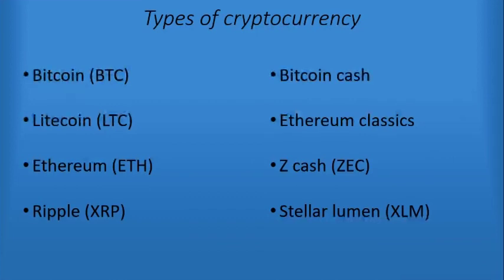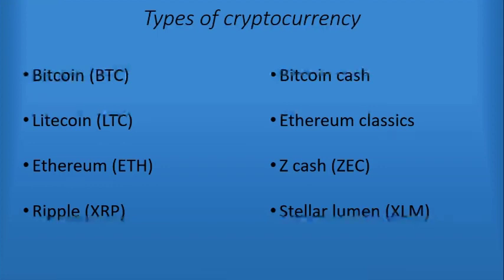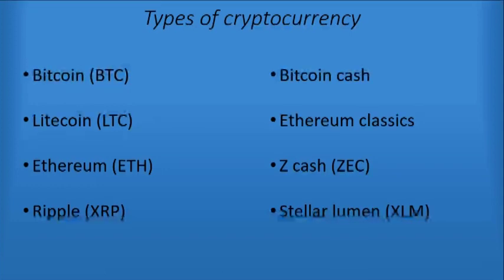Let's move on to other types of cryptocurrencies. The second one is Litecoin, which was introduced in 2011 as an alternative to Bitcoin, which was created in 2008 or 2009.